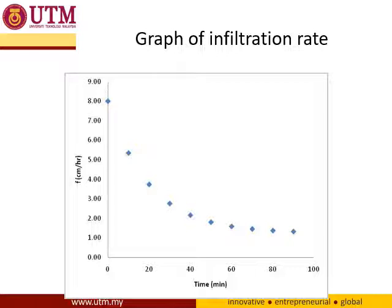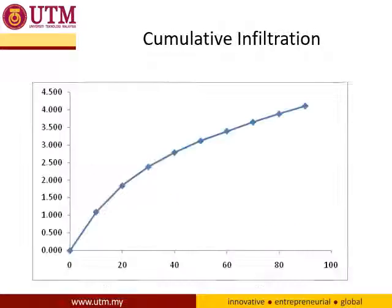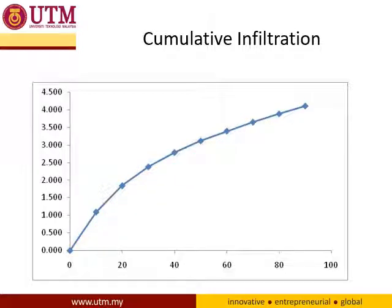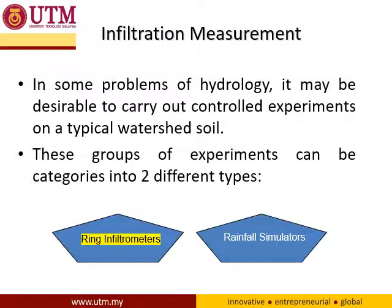This is an example of infiltration rate against time from site observation data and experiments. If we do a cumulative infiltration calculation, we can see that the slope of the graph becomes milder over time, because as time goes by, the infiltration rate will be lower. How do you get infiltration rate data on site? There are several methods: using ring infiltrometers or rainfall simulators. For our scope, we will look into ring infiltrometers.